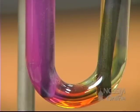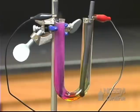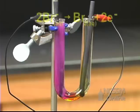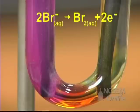At the anode, the water can be oxidized or the bromide ion can be oxidized. The bromide ion is more easily oxidized than the water, so we'll see the formation of a reddish-brown solution of bromine.